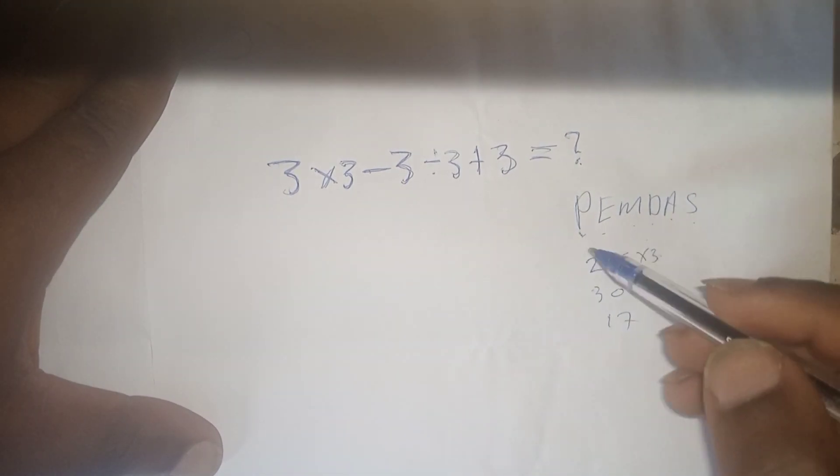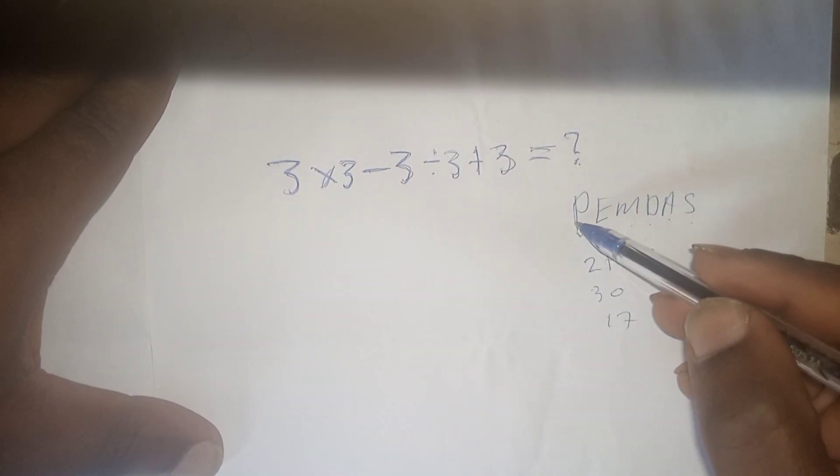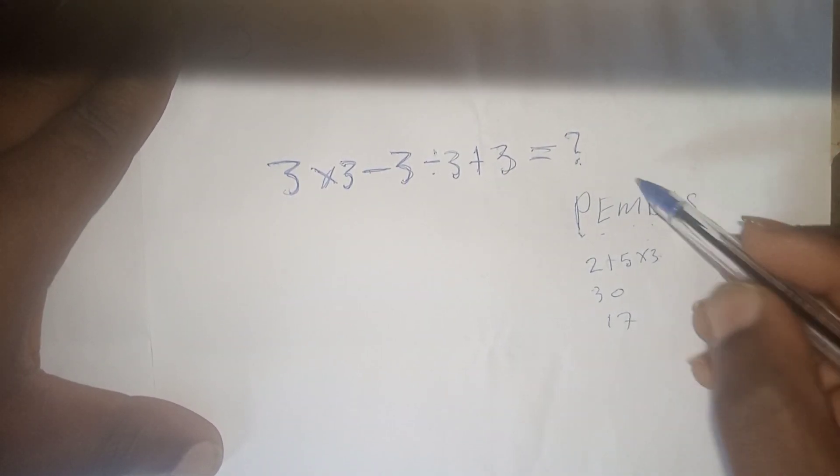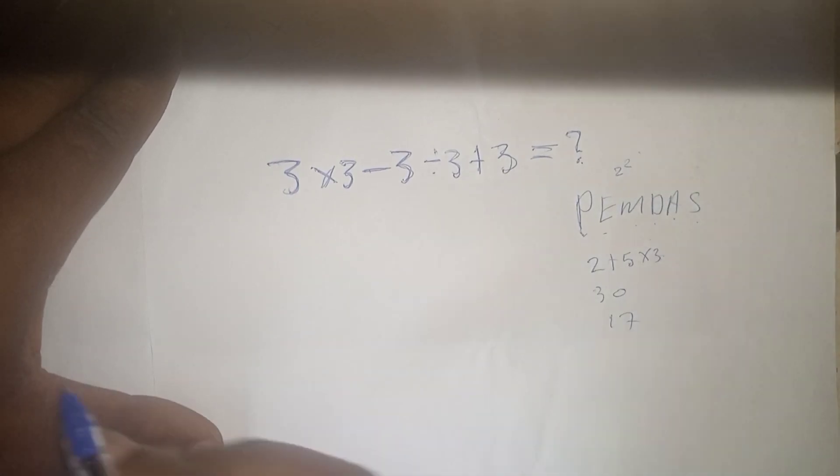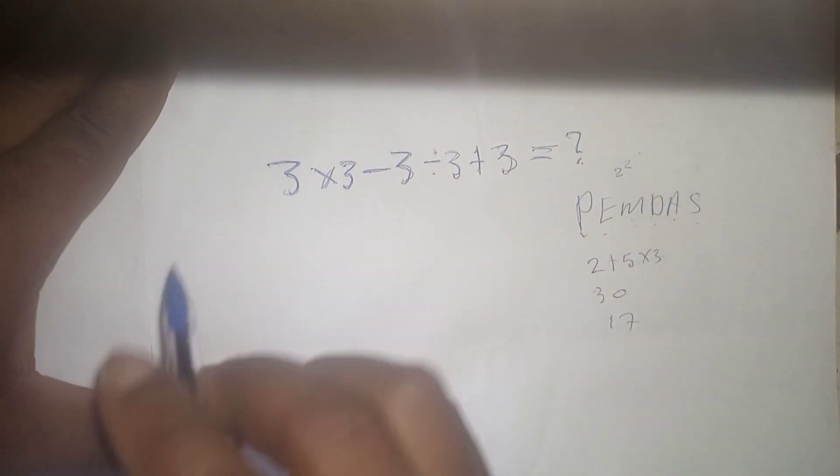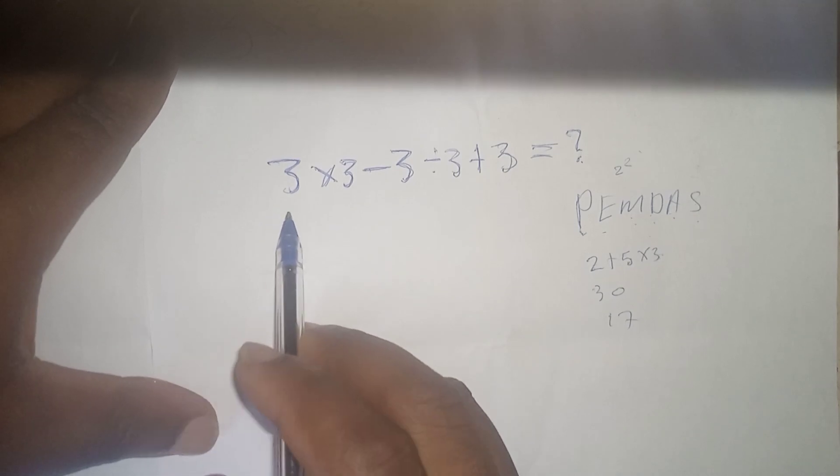So in this rule, we need to do what is in the parenthesis or in the bracket. We do the exponents, like 2 raised to a power, we multiply, we divide, we add, we subtract. So if we are going to apply this PEMDAS here,